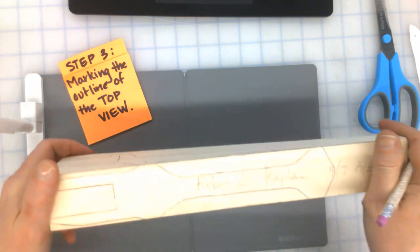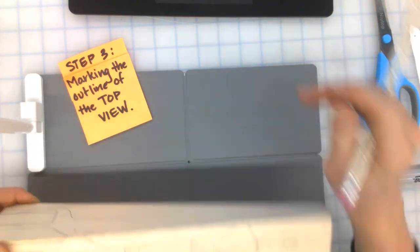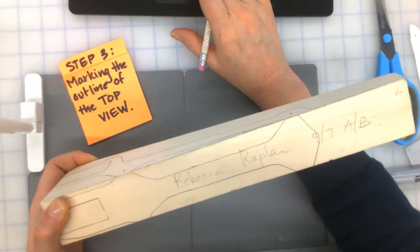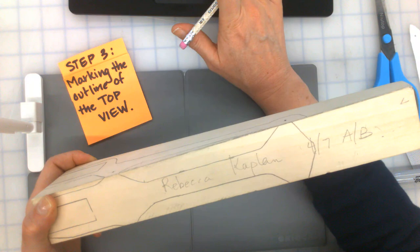All right. We're pretty much done. Make sure your name and day and period are on the bottom of the block and put it in the box at the front of the room that has all the blocks from your class. You are done.